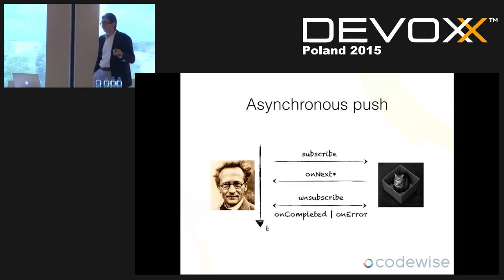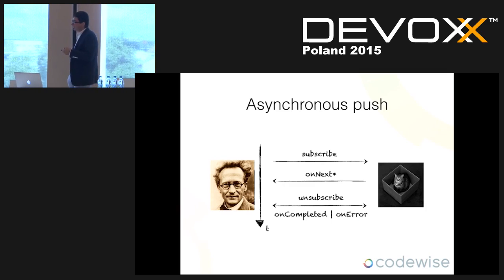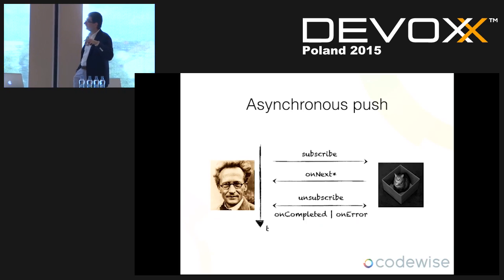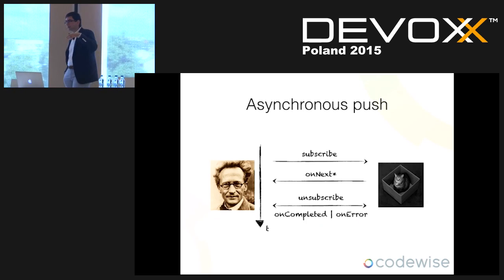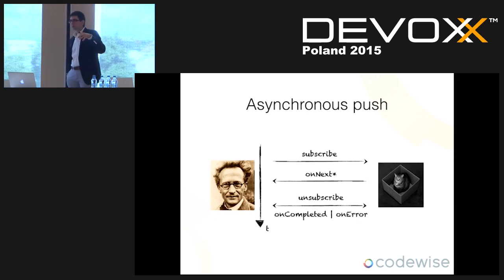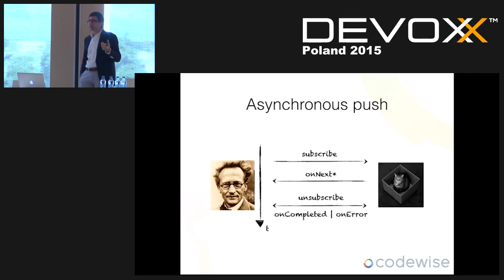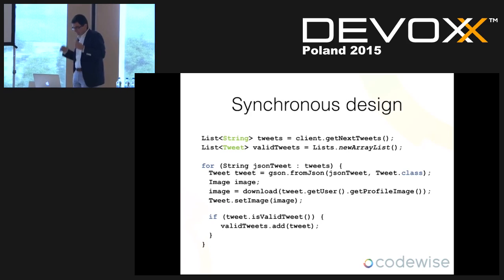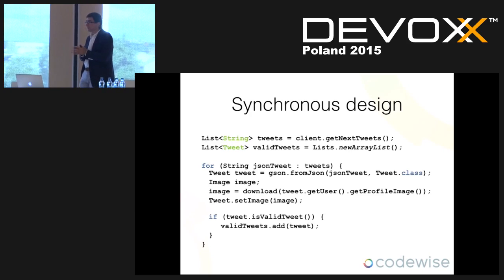If we want to stop receiving data we can call unsubscribe, which is best-effort — the observed object does not have to finish immediately, but once it calls onCompleted it will never send more messages. In every RxJava implementation this is single-threaded: the code run inside is single-threaded, although you can emit events from multiple threads and the framework preserves that invariant.